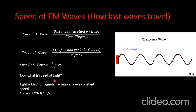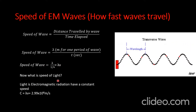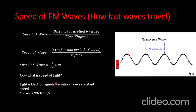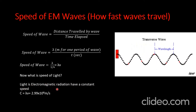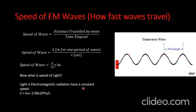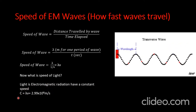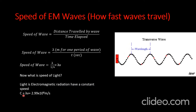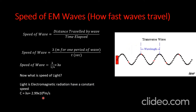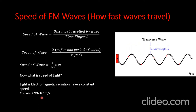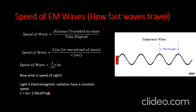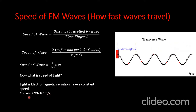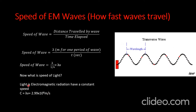The speed of light: electromagnetic radiation has a constant speed. So c = λν, which equals 2.99 × 10⁸ meters per second. This is the speed of electromagnetic waves.